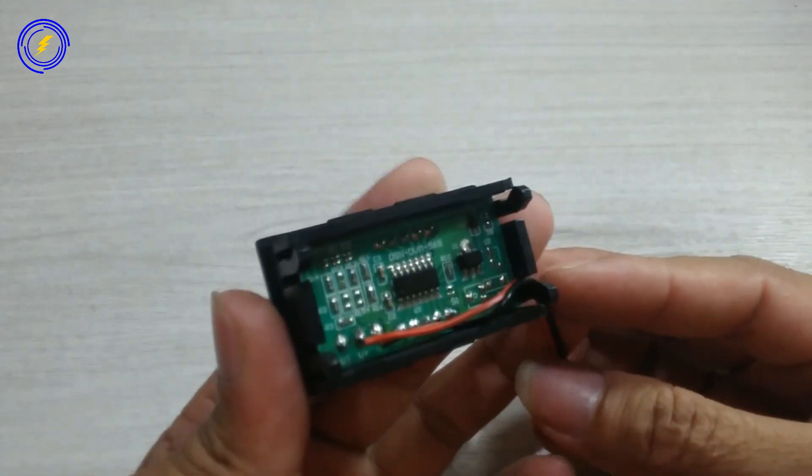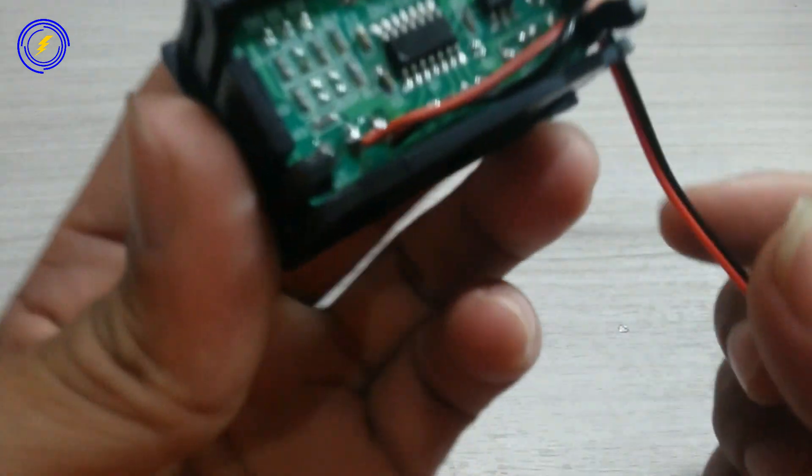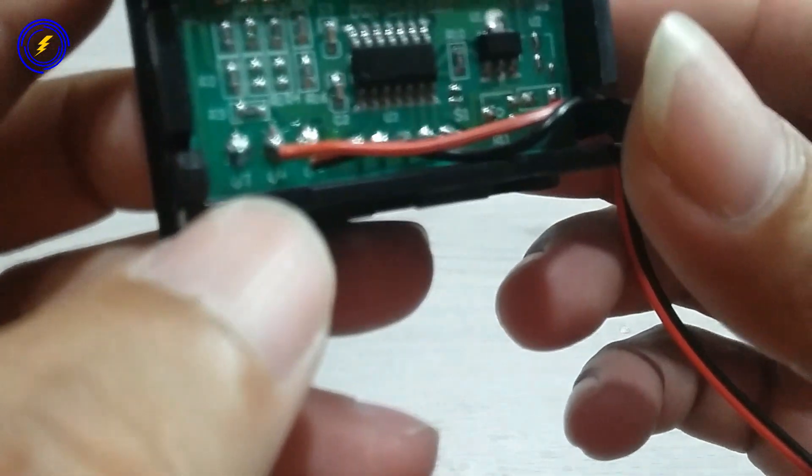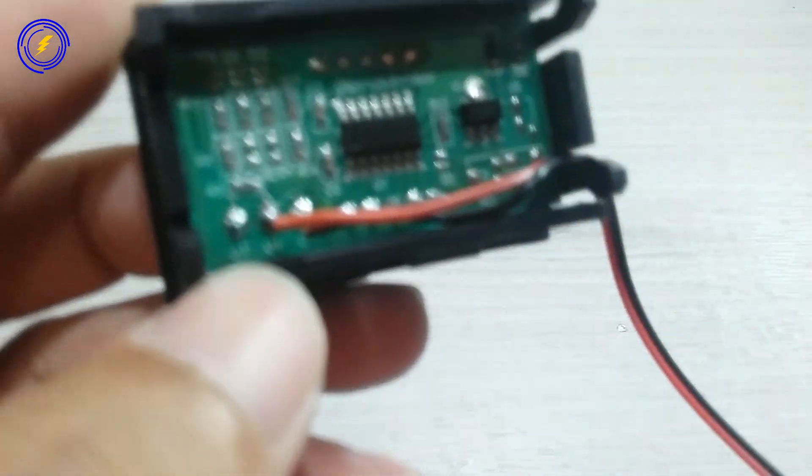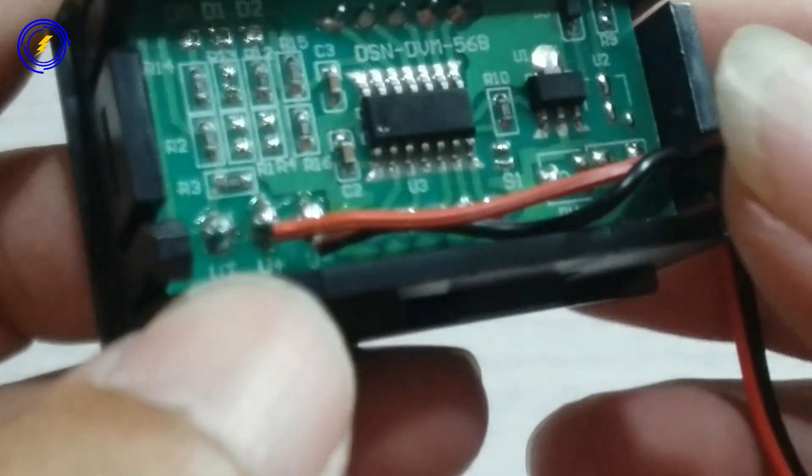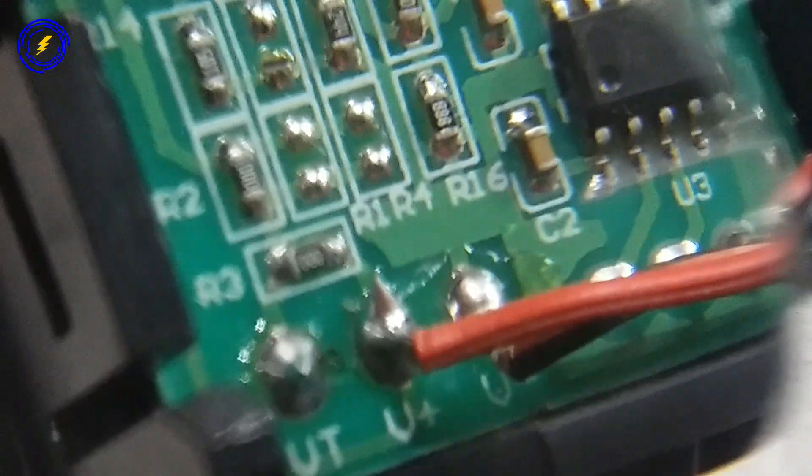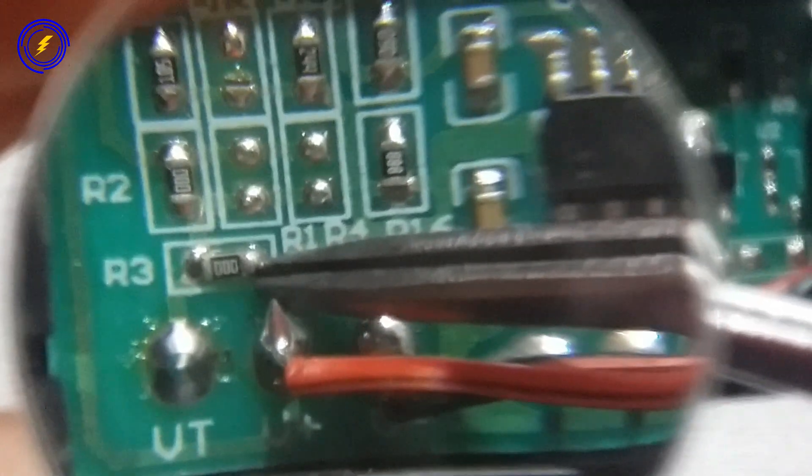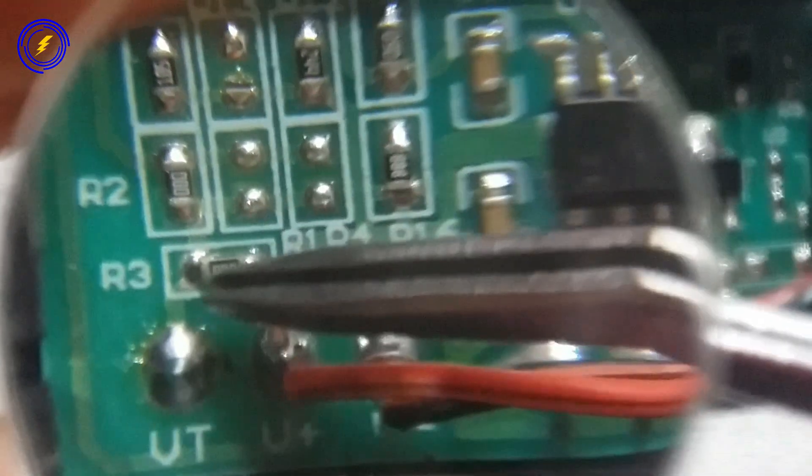Saya sudah menyiapkan sebuah voltmeter. Ini voltmeter ini terdapat tulisan VT, V+, dan V min. Disini terdapat resistor 0 ohm, yang bertuliskan 0, 0, 0. Ini nanti saya akan modifikasi voltmeter ini menjadi alat yang berguna.